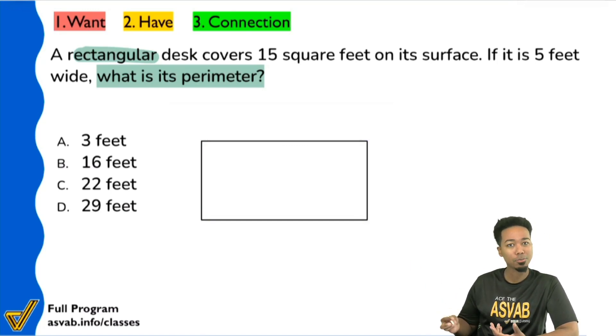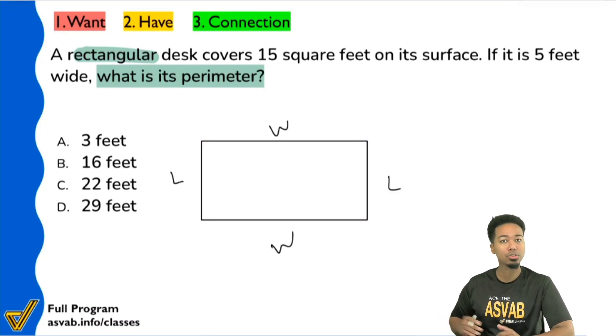And if we have a rectangle, we want to find its perimeter, well, we're going to have the lengths and the widths. And so we're just going to add those all up and we're good. So again, that's the goal of the question. We want the perimeter, the distance around.